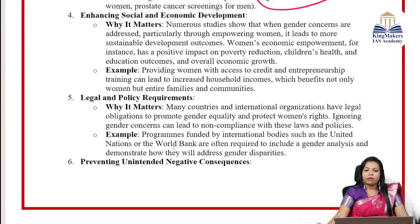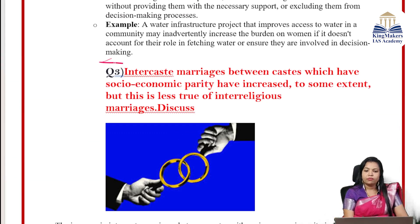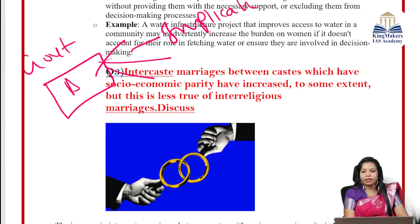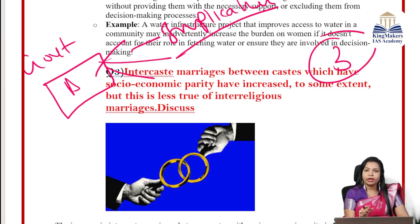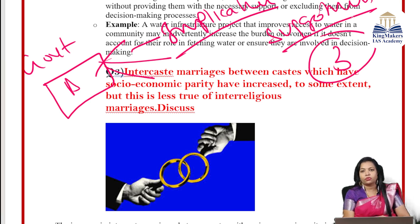Enhancing social and economic development, fulfilling legal and policy requirements, and preventing negative consequences are key reasons gender concern matters. Discuss what the government has done, what has been neglected especially regarding transgender persons, and the implications of that neglect. If anyone includes transgender with relevant acts in their answer, they will earn extra marks. Give suggestions based on committee reports or Supreme Court judgments — not personal opinions. End your answer with a way forward.